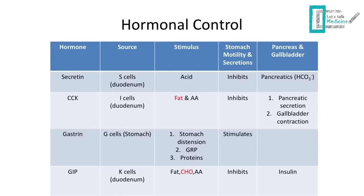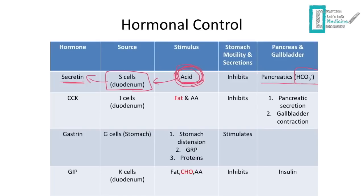Now for the hormonal control of the GI tract. Our first hormone is secretin, sourced from the S cells of the duodenum. What stimulates secretin is acid. Once the chyme from the stomach enters the duodenum, it's acidic, and the duodenum can't handle much acid. So the acid stimulates the S cells to secrete secretin, which then tells the pancreas to release bicarbonate to buffer the acid, and tells the stomach to stop motility and secretions.